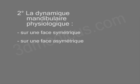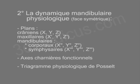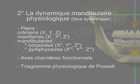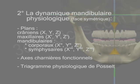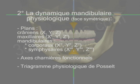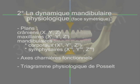Secondly, physiological mandibular dynamics on a symmetrical phase and on an asymmetrical phase. Let's take for example a symmetrical phase: cranial, maxillary, and mandibular symmetrical planes and their interactivity — the hinge axis, the bitemporal axis, and the bicondylar functional McCallum's axis.